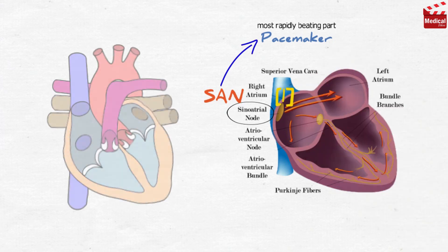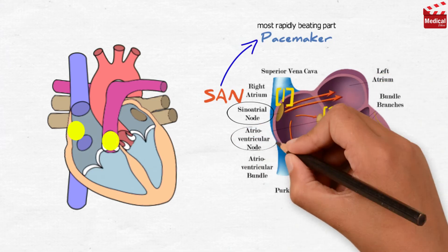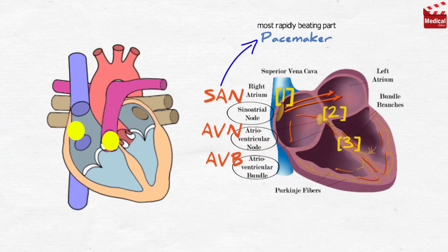First, impulse starts from sinoatrial node, then travels through atria, producing contraction of the atria. Then it reaches atrioventricular node, then to atrioventricular bundle, then travels through the ventricles, producing contraction of the ventricles.